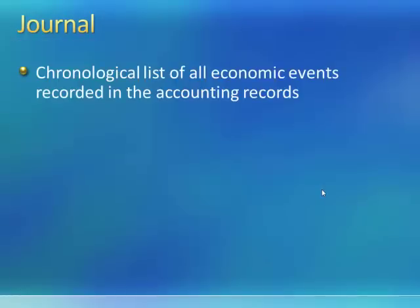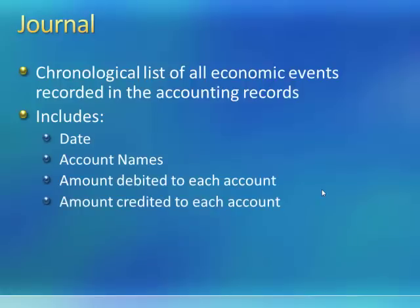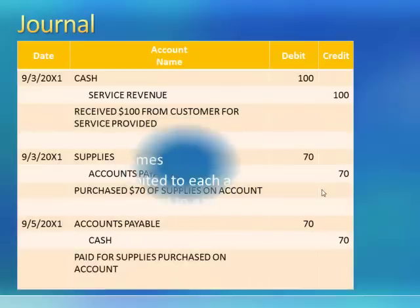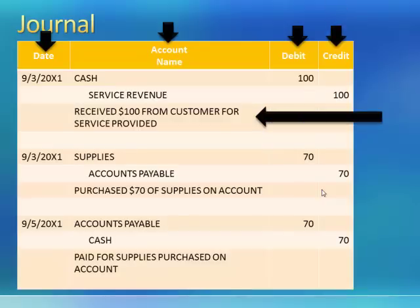Remember, the journal is a chronological list of all economic events recorded in the accounting records. The journal includes the date, the account names, the amount debited to each account, and the amount credited to each account, as well as a description of the transaction. Reviewing the journal, we see a date, account name, the amount debited, the amount credited, and a description for each transaction recorded in the journal.